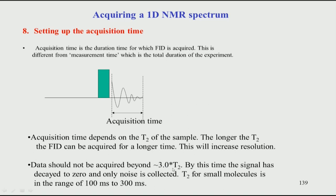The acquisition time is typically about 3 times T2, because after 3 times T2 the signal has gone completely to zero. This can be mathematically shown. The intensity of the FID equals I₀ times cosine of the frequency (the time-dependent oscillation) times e to the power minus t over T2. This is the form of the FID, as we saw in the last class.